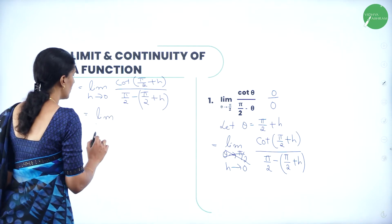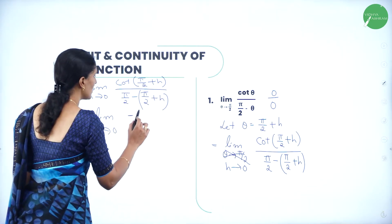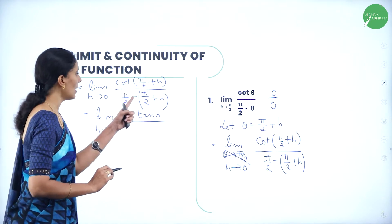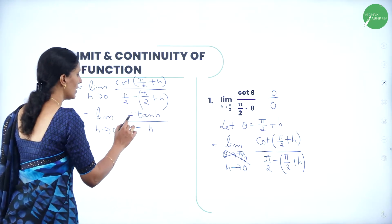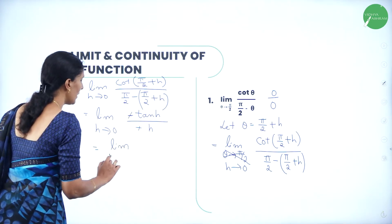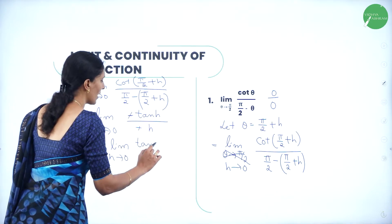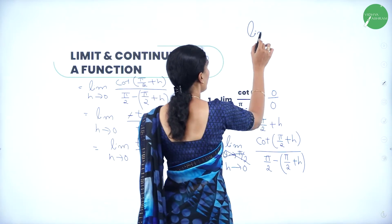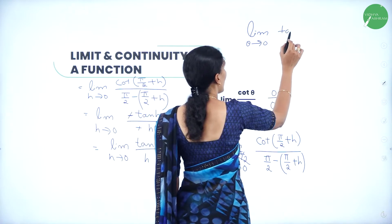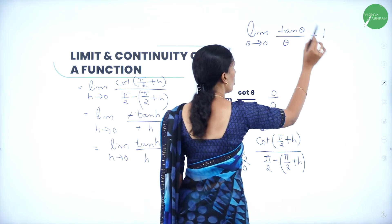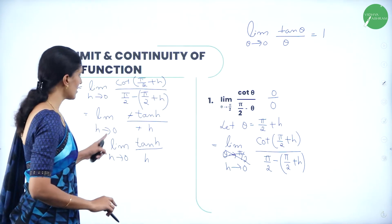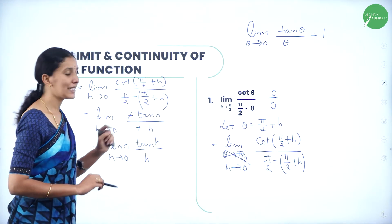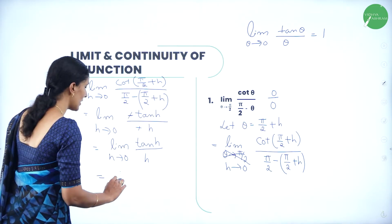What is cot(π/2 + h)? By the allied angle property, it is −tan h. So we get: limit as h tends to 0 of −tan h divided by (π/2 and −π/2 cancel, leaving −h). The negatives cancel, giving us limit as h tends to 0 of tan h / h. From the corollary proved in the previous session, limit of tan θ / θ as θ→0 is always 1. So this is of that form, and the value is equal to 1.